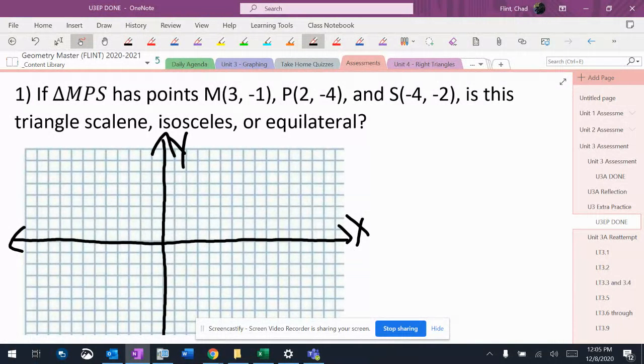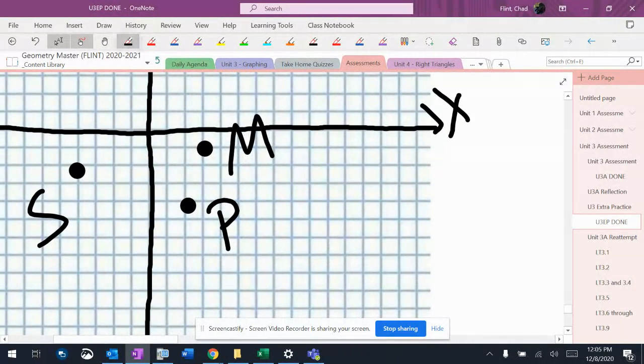So plotting the points: M at (3, -1), P at (2, -4), and S at (-4, -2). There's my points. So I draw in my triangle there.